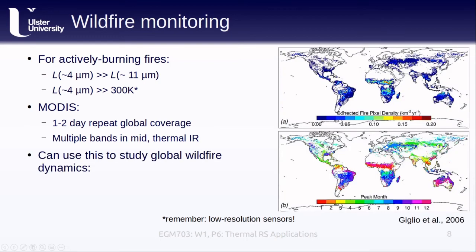We can use MODIS—and the fact that fires have much brighter radiance in the mid-infrared compared to the thermal infrared—to study global wildfire dynamics, as was done in a 2006 study by Giglio et al. By dynamics, I mean factors such as the duration and timing of the wildfire season in a given area as well as the intensity. With observations stretching back over two decades, we can also study how these factors are changing in the face of climate change.